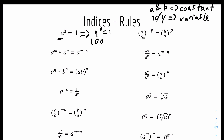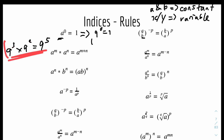Next we have: A to the power of M times A to the power of N equals A to the power of M plus N. For example, 9 to the power of 3 times 9 to the power of 2 equals 9 to the power of 5. The base number — which is 9 in this case — must be the same; it's just the powers that differ. So 3 plus 2 gives 5. You can check this in your calculator to verify the left-hand side matches the right-hand side.